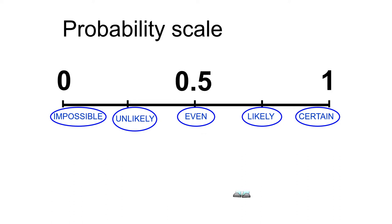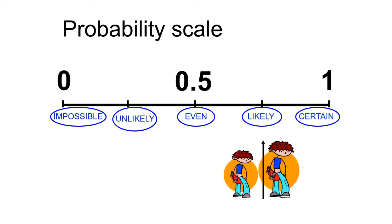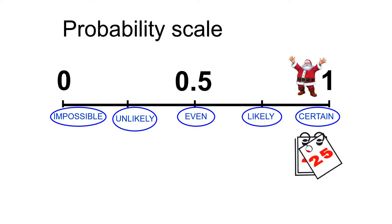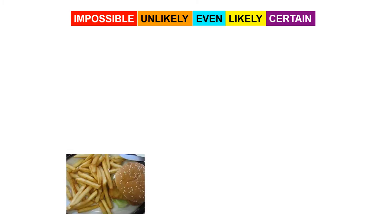An example of likely: it is likely that you're going to grow a bit taller. It's not certain - some of you may not - but it's likely you will grow taller as a first year. An example of something that's certain: Christmas is on the 25th of December. This doesn't change. It is certain.